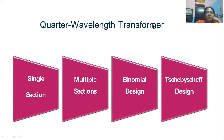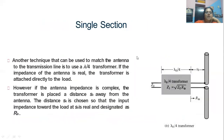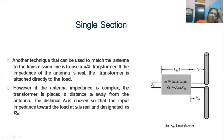Now, these are the quarter wavelength transformers which can be designed. If the length of the transmission line is considered to be lambda by 4, it is known as the quarter wavelength transformer, and it is defined on variable sections like single section, multiple sections, binomial designs, and Chebyshev design. If the impedance of the antenna is real, then the transformer is attached directly to the load, using the transmission line as a transformer by keeping its length lambda by 4.